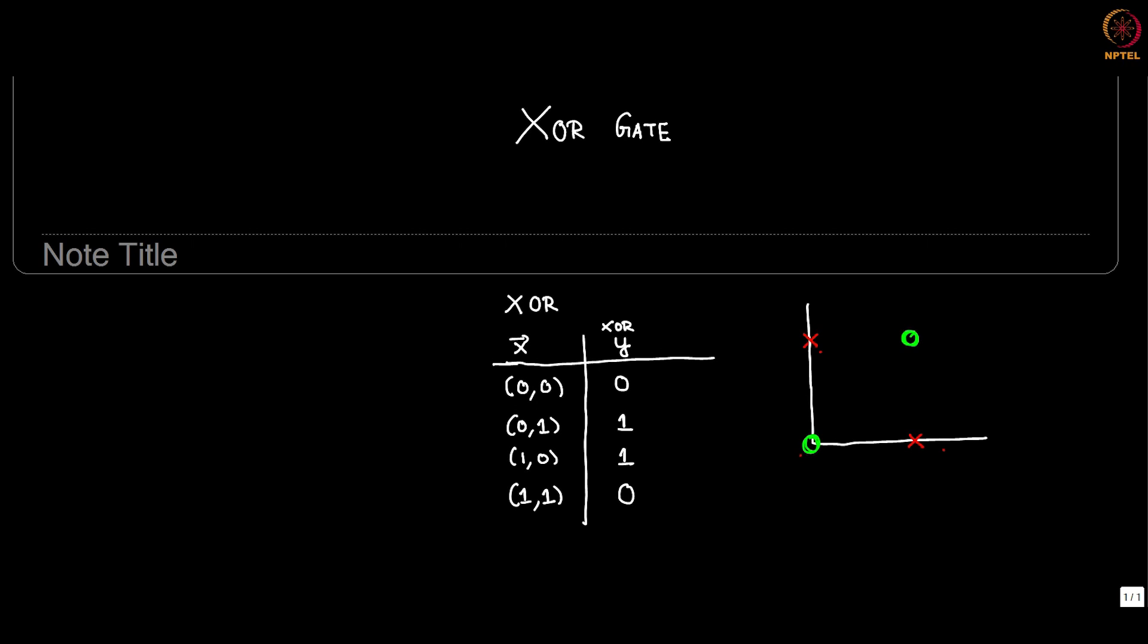Now we know that logistic regression works where the Z equal to 0 line, which was the W0 plus W1 X1 plus W2 X2 line equal to 0, would function as the classifying line. But unfortunately you can see that no classification line here would work. Any line that you draw cannot actually separate the X's out from the O's. We can of course make classification boundaries that are non-linear, for example this. This would be a non-linear classification boundary.